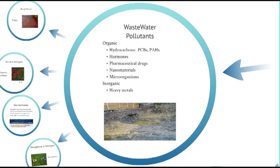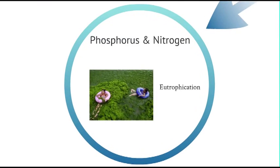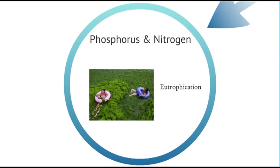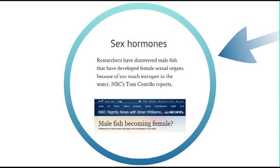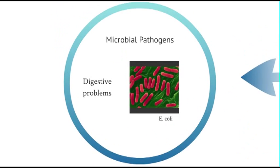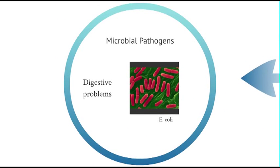Organic contaminants include hydrocarbons, hormones, pharmaceutical drugs, nanomaterials, and microorganisms. Enrichment of nutrients in the sludge causes eutrophication. Sex hormones are leached through runoff into surface water, which can cause variations in the sex of fish, among other problems. E. coli contamination is primarily caused by agricultural runoff.